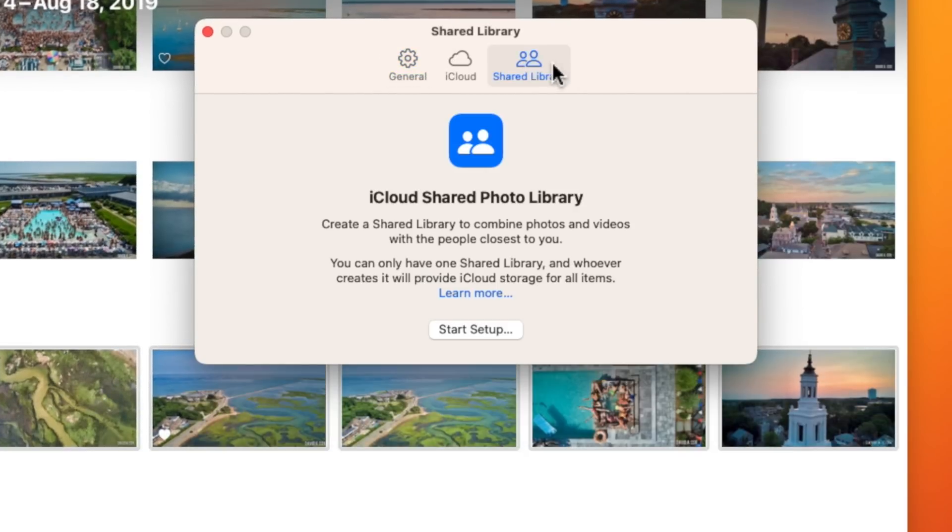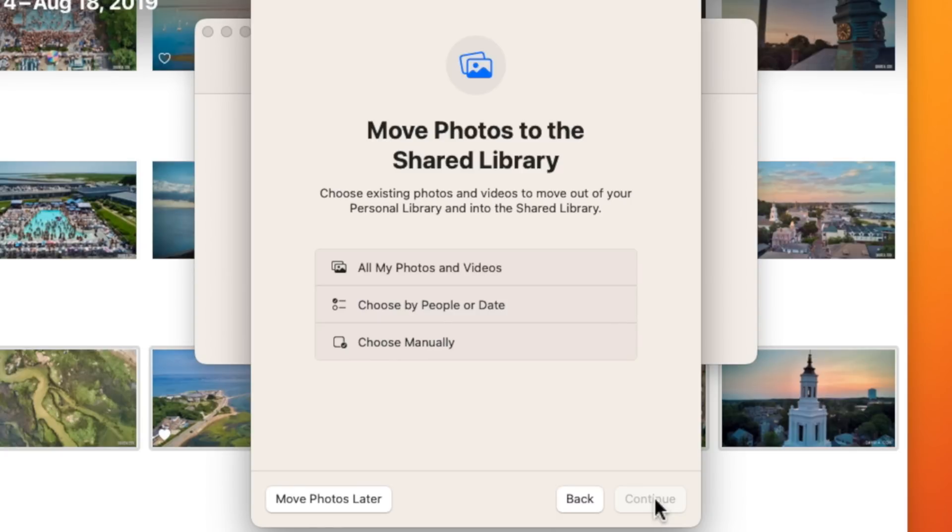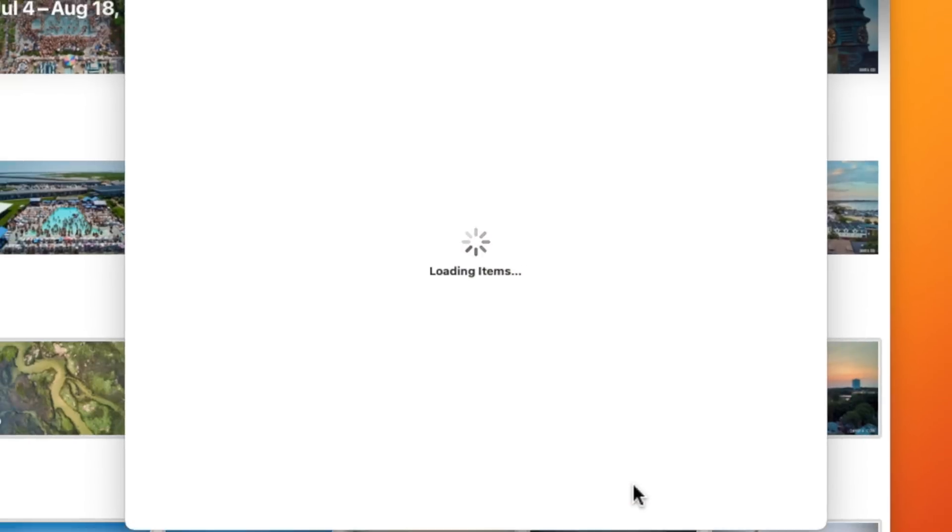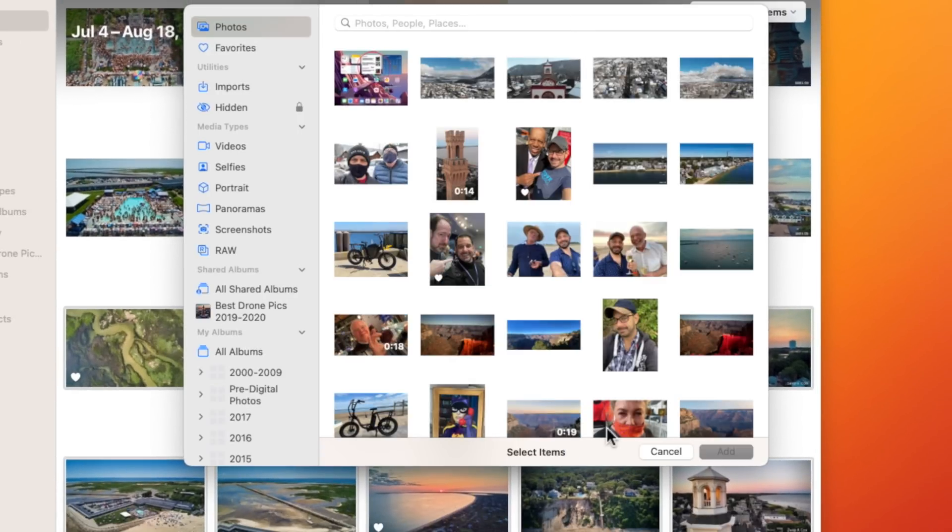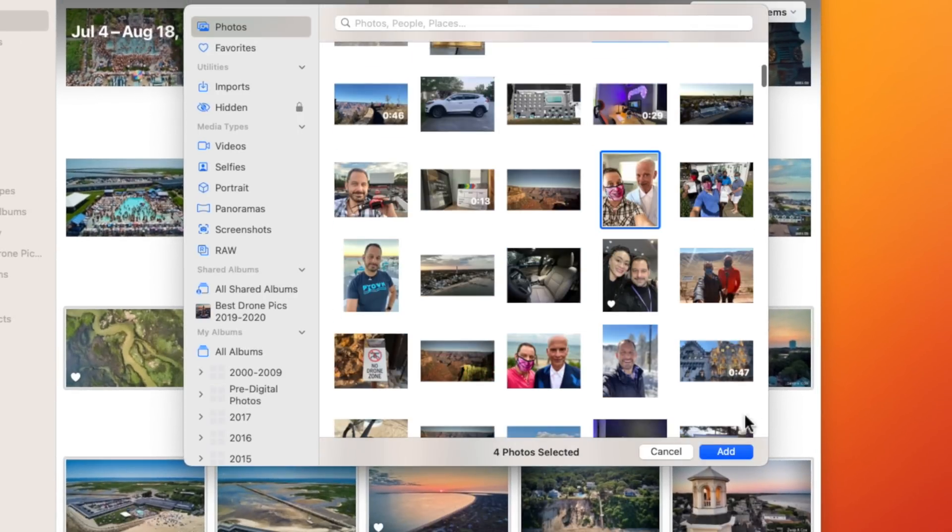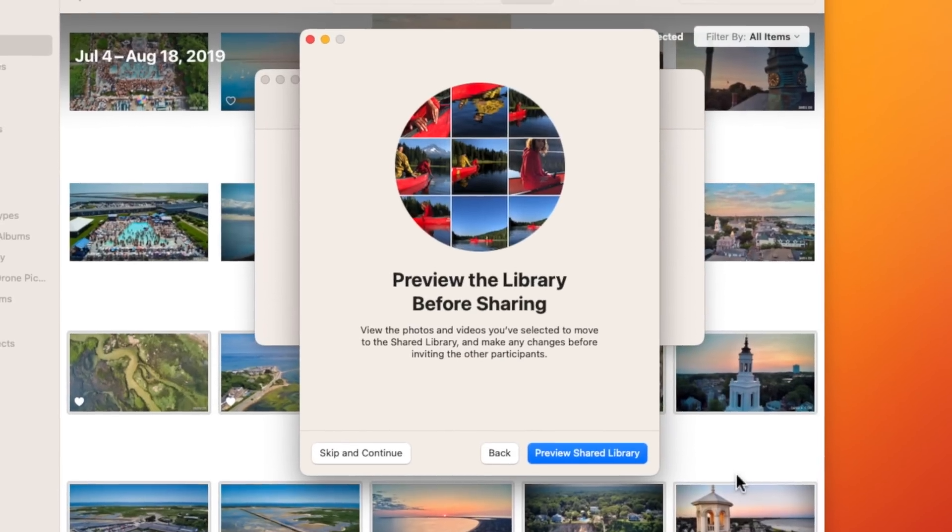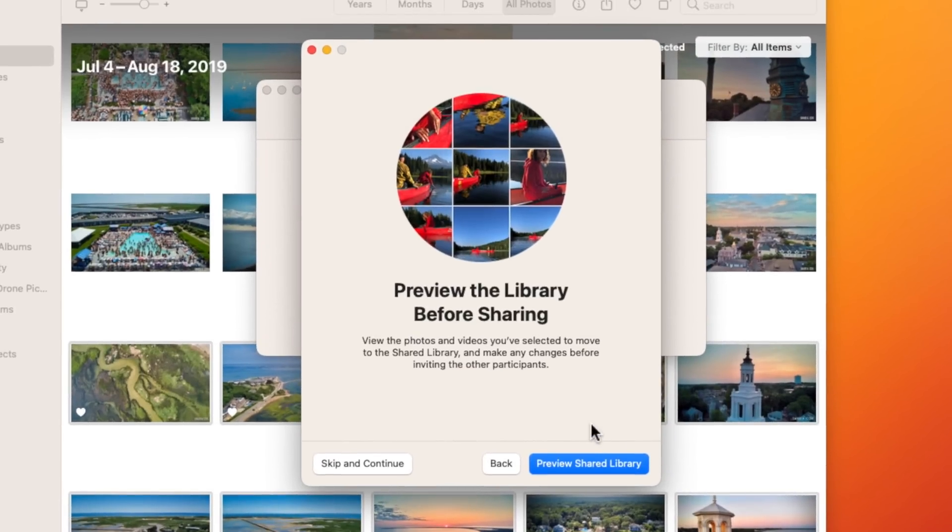You'll then need to add the other people in your family that you would like to include. It will now ask you how you want to set up your library. You can move all of your photos into that shared library. You can choose based on who is in them, or by a certain date, or you can manually set this up. For this demonstration, I'm going to go with manual. I'll now just pick a few photos, and when I'm done, it will ask me if I want to preview the library before sending out the invite.